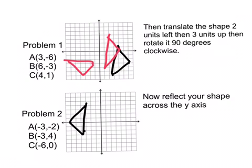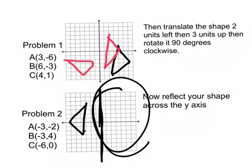So now the next step is now where you have to reflect your shape across the Y axis. And what I mean by that is you have to reflect it off on this side right here. So like this. And there you go. You reflected your shape off the Y axis.